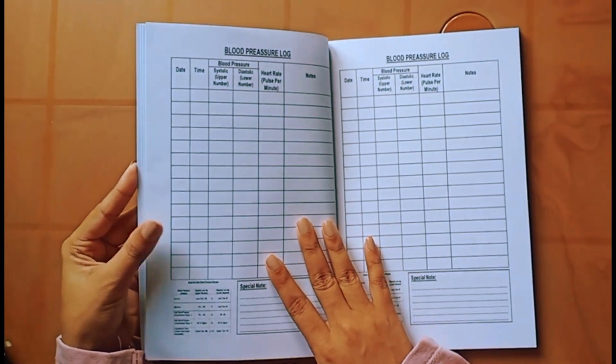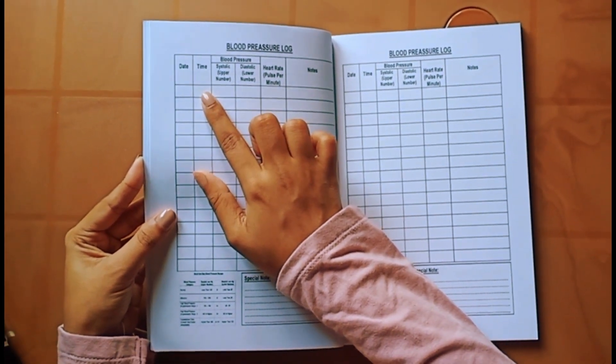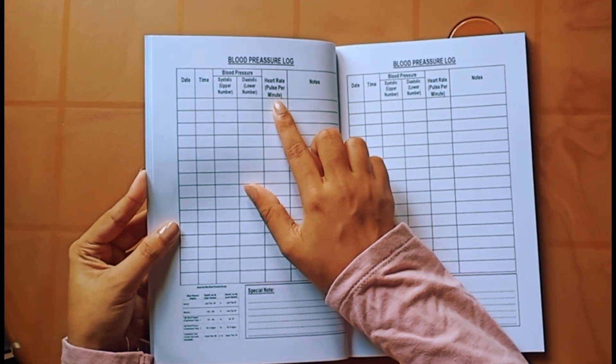Then comes the empty table for blood pressure record keeping. The table contains date, time, blood pressure, heart rate, and a special space to keep notes for each time you record a measurement.